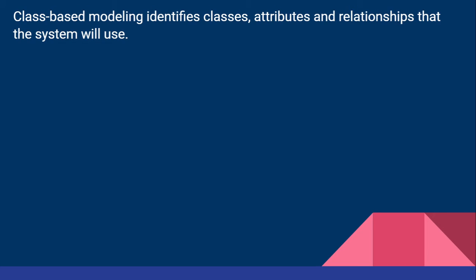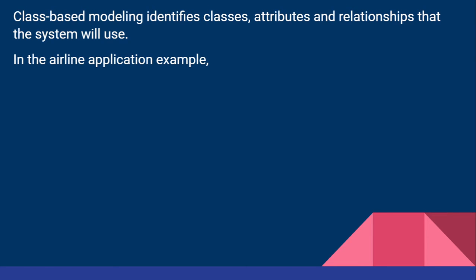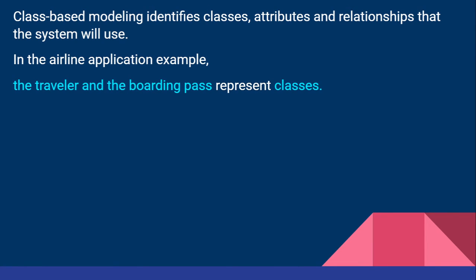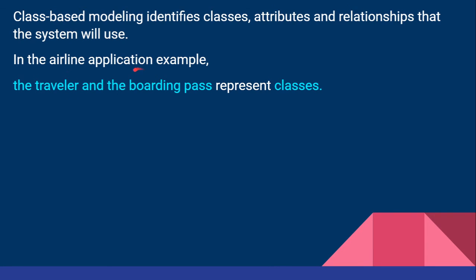The attributes are the behavior of the class and the relationship is the communication between the different classes. For example, we are taking an airline example where we have different classes. The travel board is a class, the traveler is a class, and the boarding pass is a class. For this scenario we are taking two example classes: the traveler and the boarding pass.